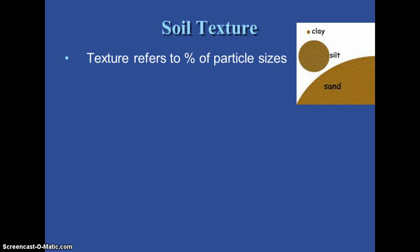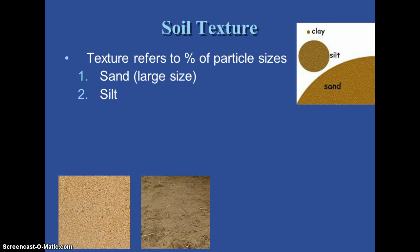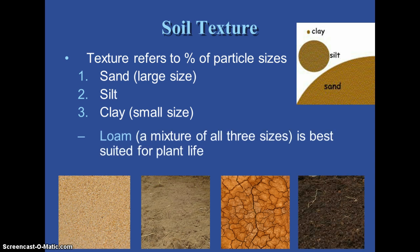When we talk about soil texture, that's one of the things we are going to be looking at when we examine our soil sample. Texture refers to the particle sizes — what percent is sand, what percent is silt, and what percent is clay. Of our particle sizes, sand is the largest and clay is the smallest. When we mix all three together, we get what is called a loam.